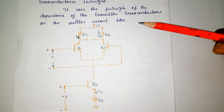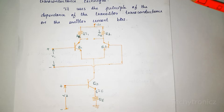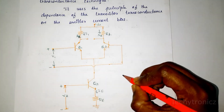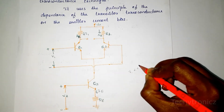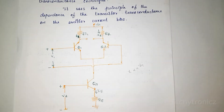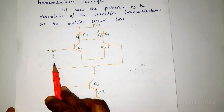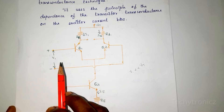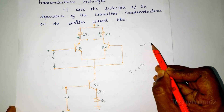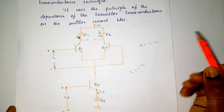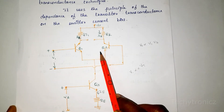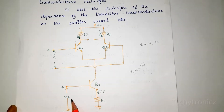For very small values of differential amplifier input voltage V1, the analog multiplier output voltage is directly proportional to the product of V1 and V2. V1 is the input voltage for the differential amplifier, and V2 is applied to the transconductance emitter current bias circuit.